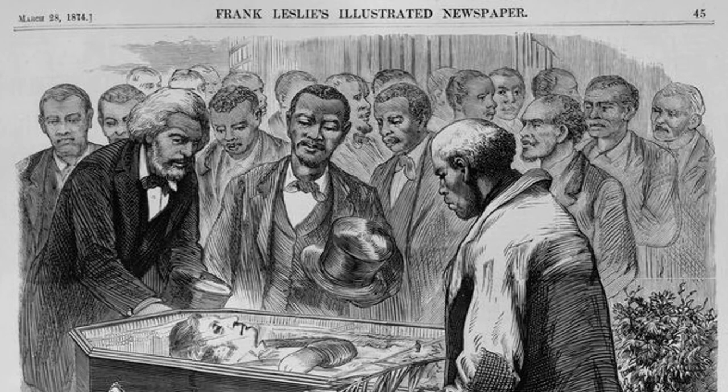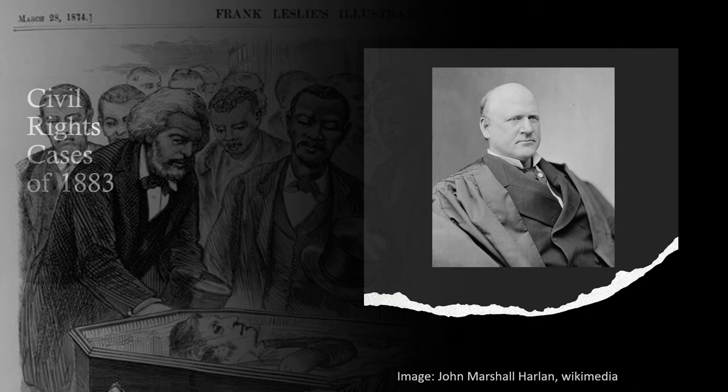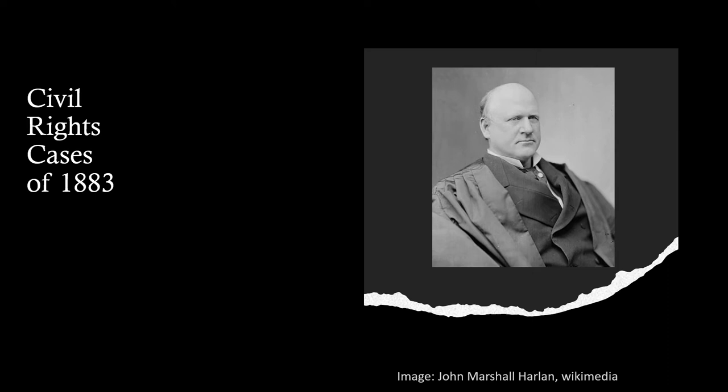The Civil Rights Act of 1875 affirmed the equality of all persons in the enjoyment of transportation facilities, in hotels and inns, and in theaters and places of public amusement. Such places were privately owned but had public functions, and therefore, according to law, were subject to public regulations. The act meant that the federal government would act as a check on unequal local and state practices.